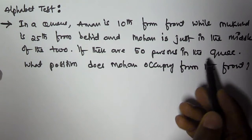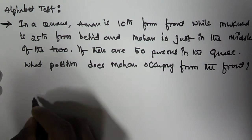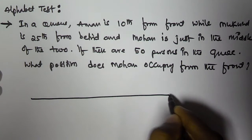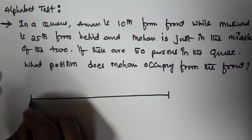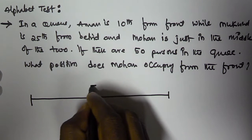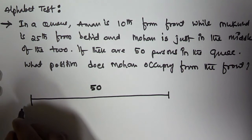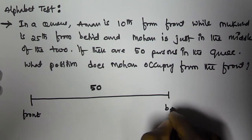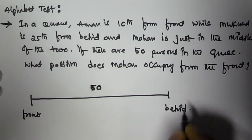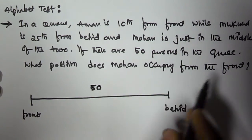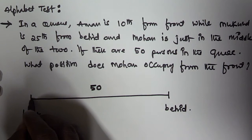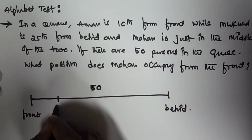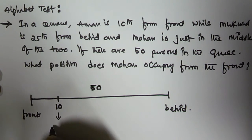Let us assume there is a queue, and the length of this queue is 50. The total length of this queue is 50 persons. Let us assume this is the front and this is the behind. In a queue, Amun is 10th from the front, so somewhere here at the 10th position, Amun is there.